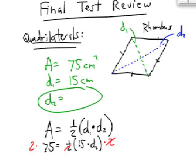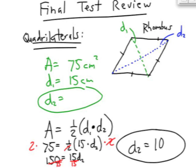Divide each side by 15, and you can see that my answer would have to be 10. The length of the second diagonal is 10 centimeters.